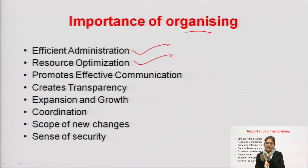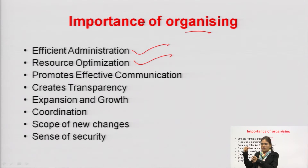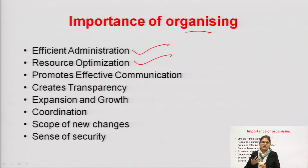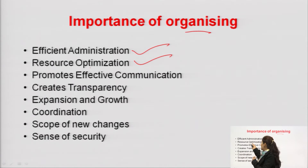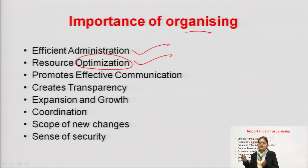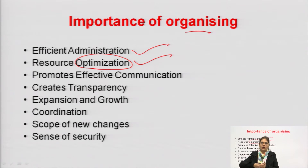Resource optimization: when similar work comes in one category in the organizing function, the manager allocates work on the basis of employees' interest and specialization, so the result will be better. If one person is specialized in a particular area, allotting that same work to them will yield results with resource optimization — done in minimum time and at minimum cost. Automatically, allotting work to specialized persons achieves resource optimization.